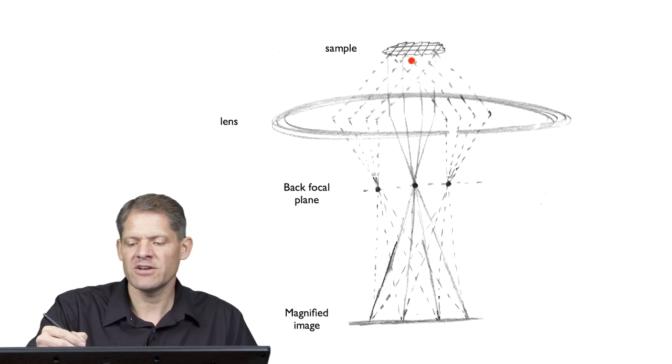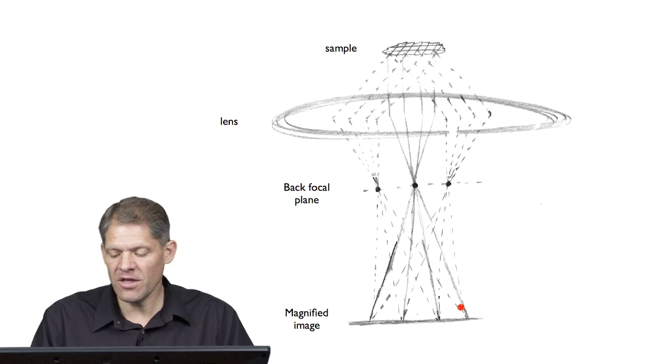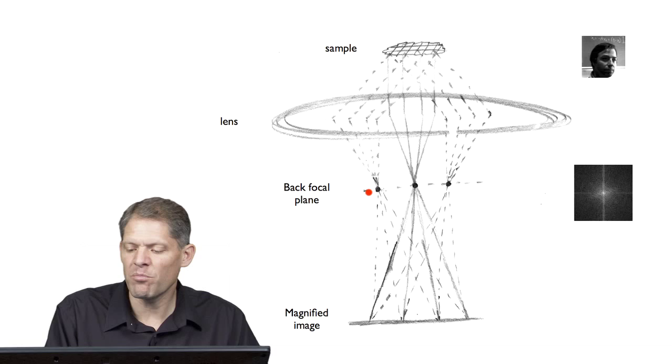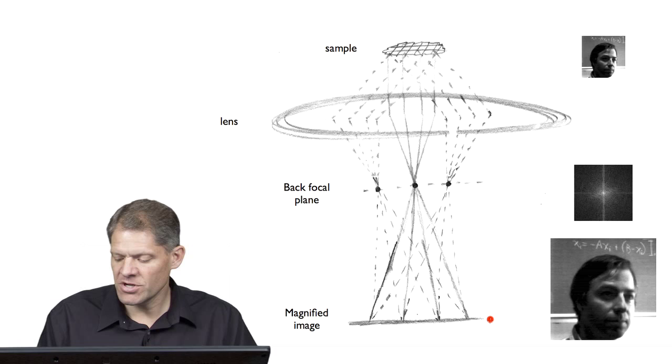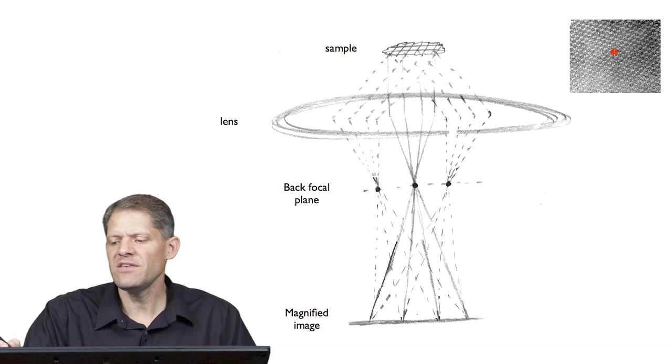So let's go back to this picture where there's a sample and electrons are scattered into all directions. That scattering is focused onto the back focal plane of the objective lens and then sails on through and reinterferes to produce a magnified image. The object is in real space and the wave function on the back focal plane is the Fourier transform of that real space object. The wave function on the image plane is again in real space because the lens does an inverse Fourier transform.